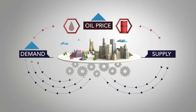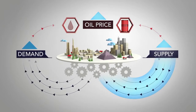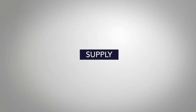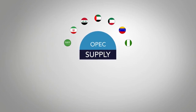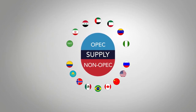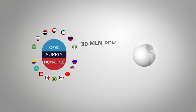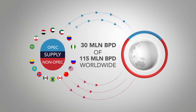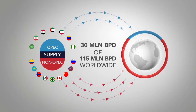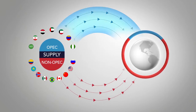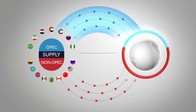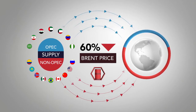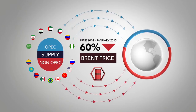To control this rise in prices, an efficient market will bring on extra supply. The supply of oil comes from two broad areas: OPEC and non-OPEC nations. OPEC supplies around 30 million barrels of the 115 million barrels that the world uses every day. Oversupply by OPEC nations has been cited as one of the main reasons behind the near 60% drop in Brent from June 2014 to January 2015.